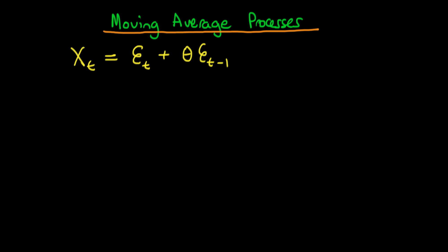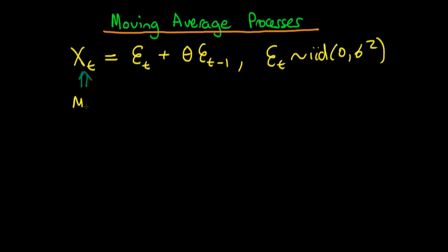Xt here is what we're modeling — this is our moving average process — and each of these error terms is IID with a mean of zero and a variance of sigma squared. We say that the process Xt is a moving average process of order 1, because there is only one lagged error term in the process.